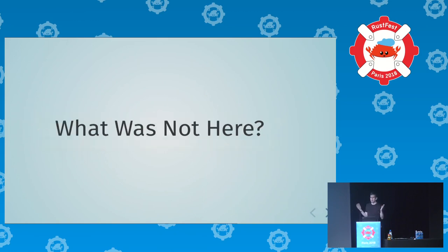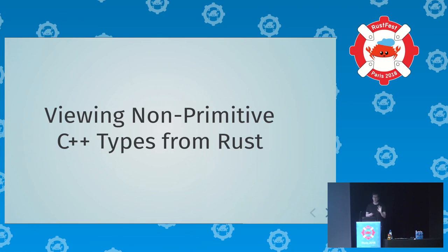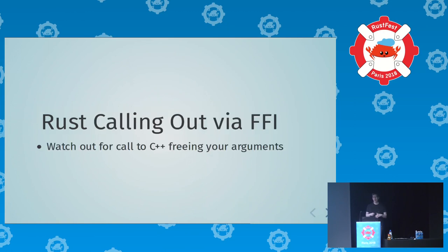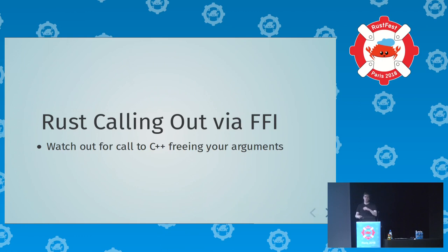In fairness, let's look at what we didn't see today. We didn't see Rust code examining any non-primitive C++ types — it's totally doable, but we didn't see it. We didn't see Rust code holding pointers to C++ objects — again, doable, but it increases complexity. And we didn't see Rust code calling out to FFI. If you do that, watch out for C++ code that you call into freeing the arguments that you got from C++ — it's a normal C++ concern, but when you're writing Rust code you might not be thinking of your arguments disappearing while you're inside a function.